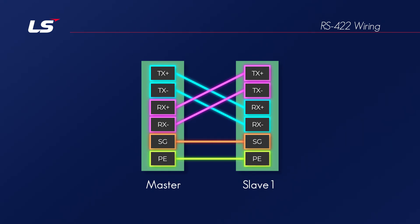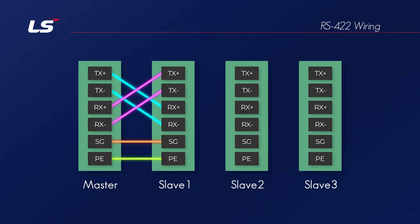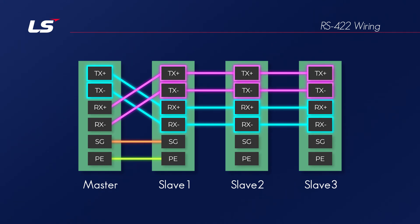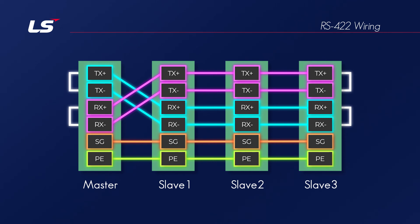In the case of RS-422 communication, one-to-N communication is possible, where one master can communicate with multiple slaves. Since multiple slaves need to receive the signal from the master, TX+ and TX- of the master are connected to RX+ and RX- pins of each slave respectively, and each slave's TX+ and TX- are connected to the master's RX+ and RX-. For one-to-N communication, terminating resistors must be installed at both ends of the system. For B-type CNET modules, it is also possible to activate the terminating resistor in XG5000.